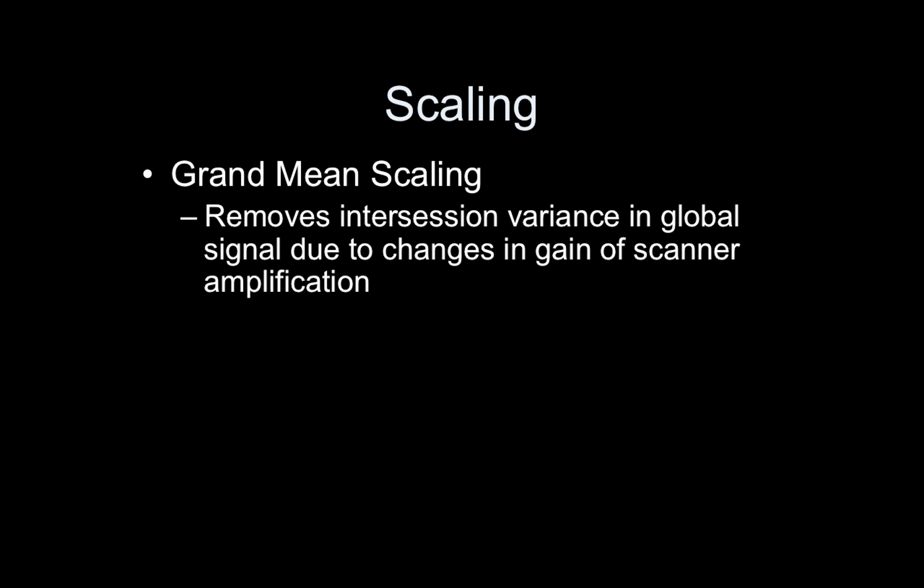Scaling is an important step, especially if you're writing your own code. There are two types of scaling: one which is good — actually necessary — and one which is typically not viewed as good for task fMRI. Grand mean scaling removes inter-session variance and global signal due to changes in gain of scanner amplification. If you scan someone today and then later, the image might be brighter later on, and that has nothing to do with the subject — it's just the scanner. We need to remove that effect.